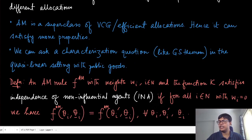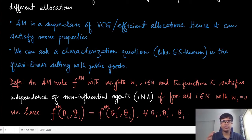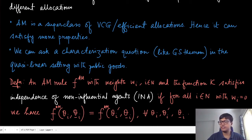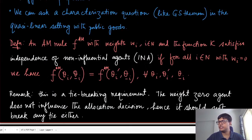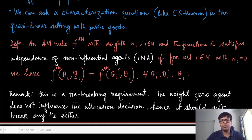Since the affine maximizer is a superclass of VCG mechanisms, we ask a characterization question — something very similar to the Gibbard–Satterthwaite theorem. Just as in restricted domains like single-peaked preferences we had the median voter rule, and in task allocation we had the uniform rule, we'll see a similar result here for mechanisms with transfers. To define that, we first need one additional property: independence of non-influential agents (INA).